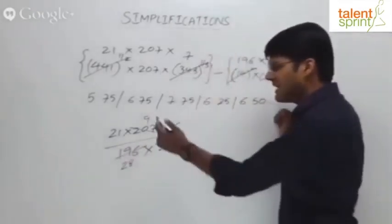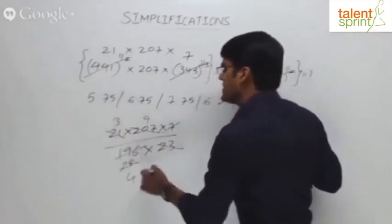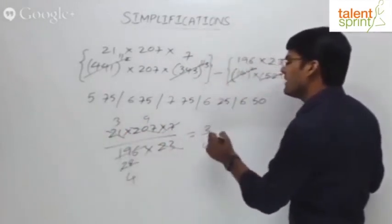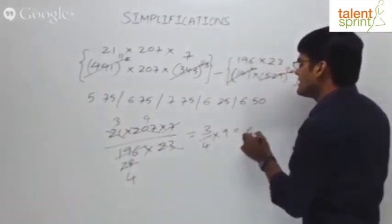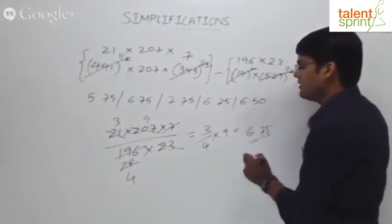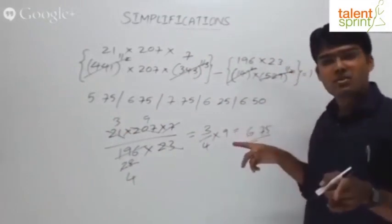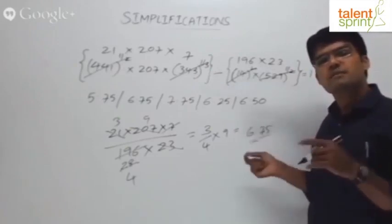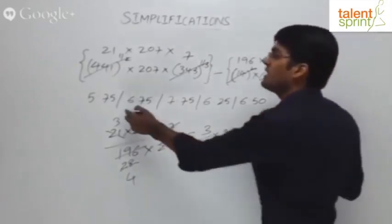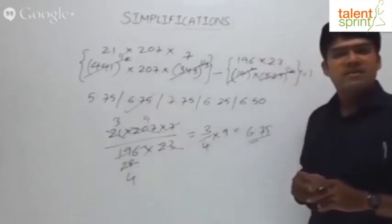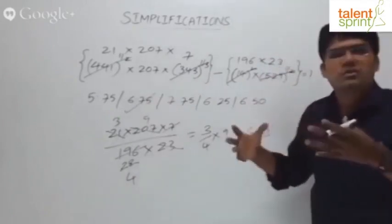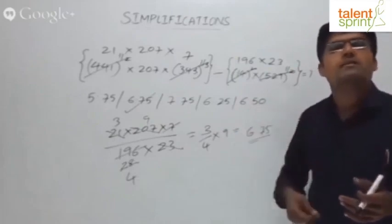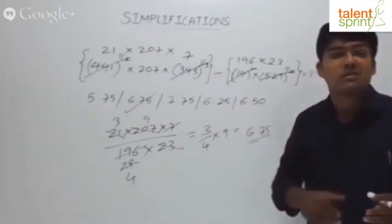21 by 28, this is 3 times and 4 times. So overall this is 3/4 into 9. What is 3/4 of 9? 6.75. 3/4 of 8 is 6, 3/4 of 1 is 0.75, so 6 plus 0.75 is 6.75. So the answer is 6.75. Simple calculations. Try to do it as quickly as possible, follow the BODMAS rule, and you will get the right answers.